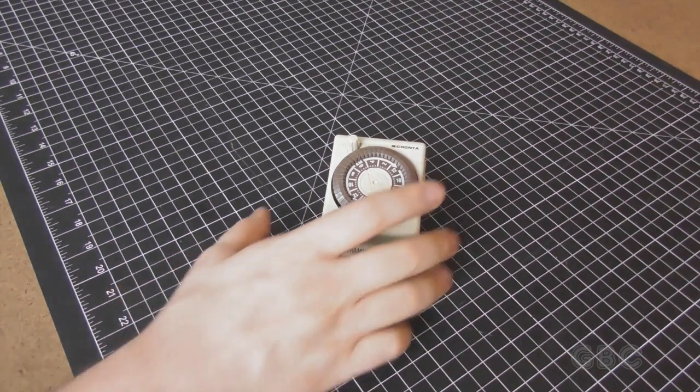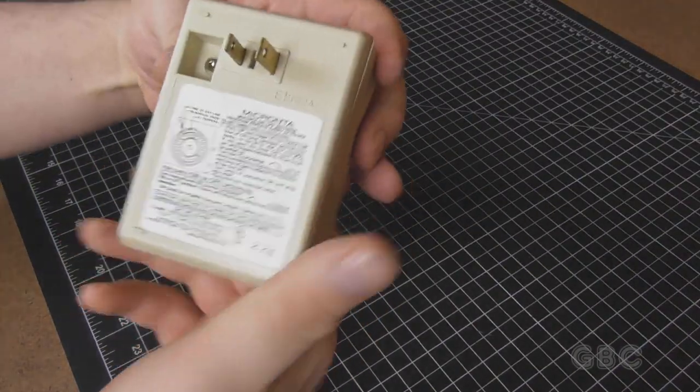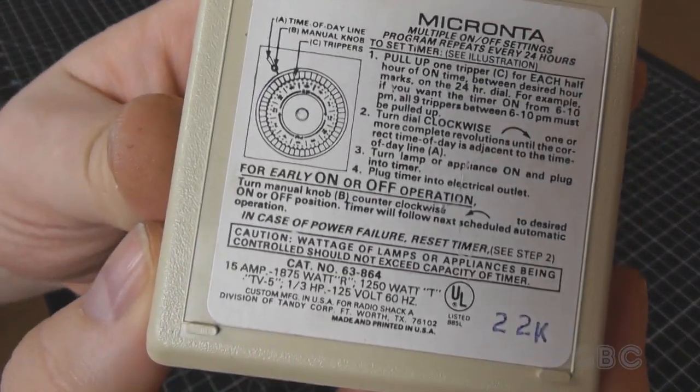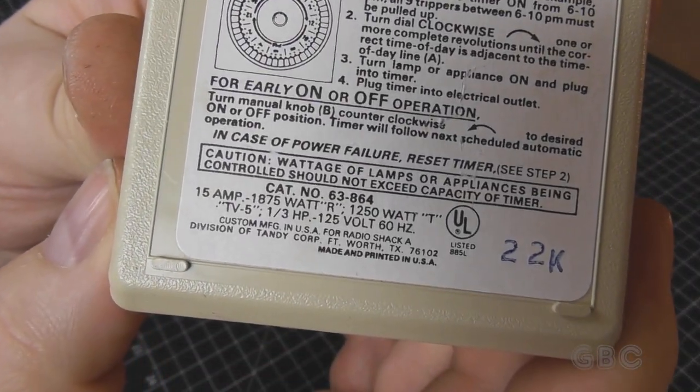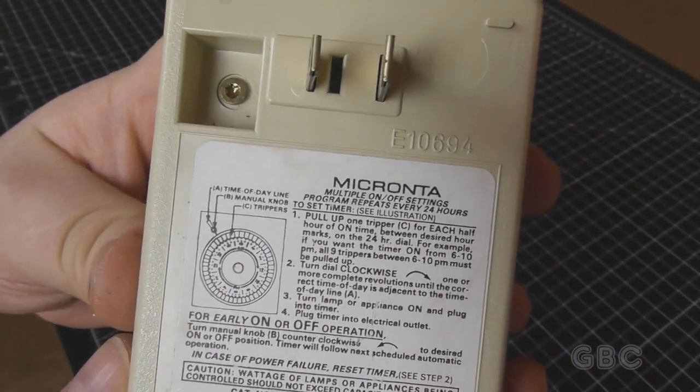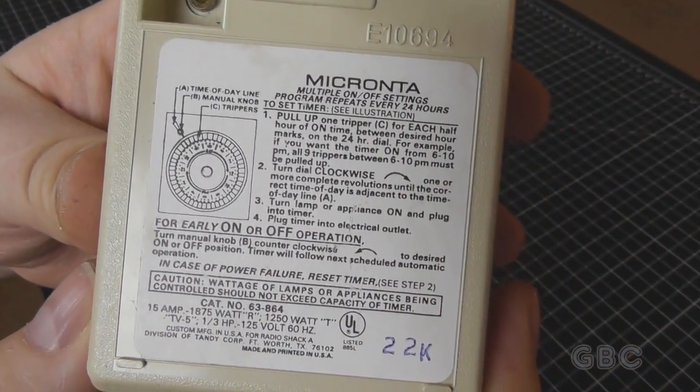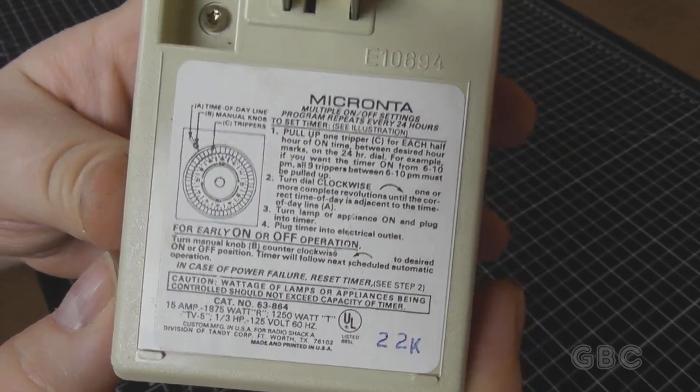This one is by Makranta. This one has the catalog number of 63-864 and the rest of this label is the instructions of how to use it.